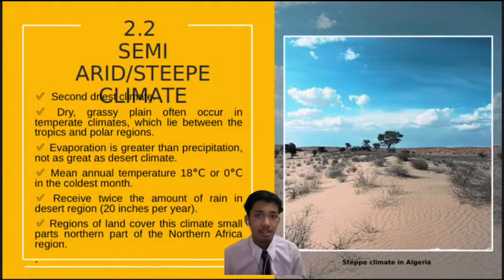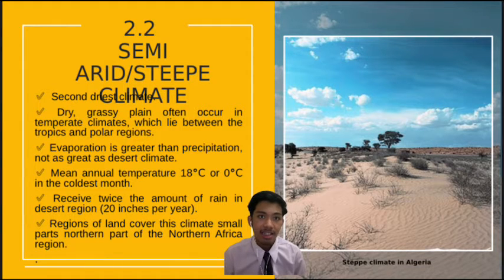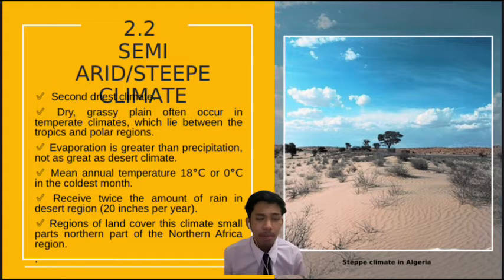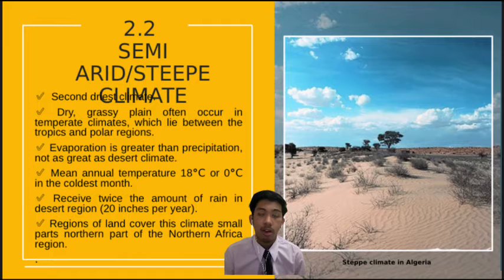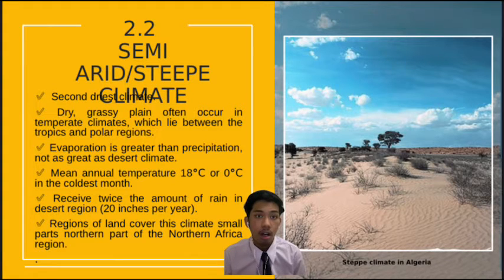Next is semi-arid climate, which is the second most dry climate. Semi-arid climate features dry grassy plains and often occurs between the tropic and polar regions. The mean annual temperature for this climate is 18°C, or 0°C in the coldest month. This climate covers a small part of the northern portion of the Northern Africa region.